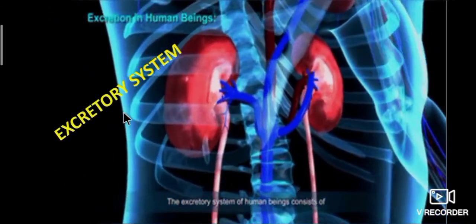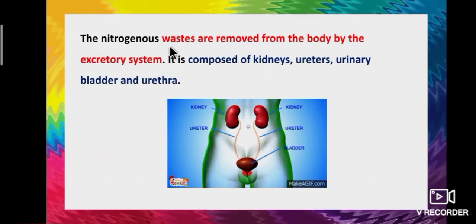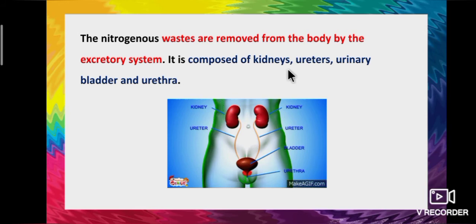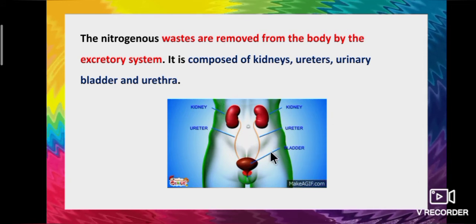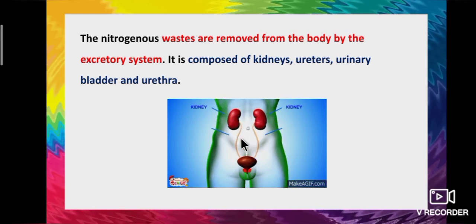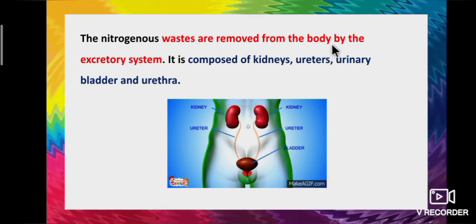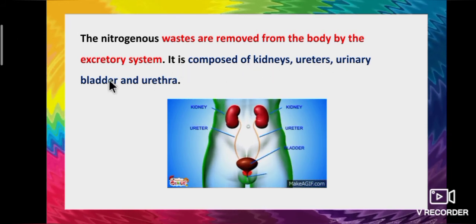Now we are going to study about the excretory system. The nitrogenous wastes are removed from the body by the excretory system. It is composed of kidneys, ureters, urinary bladder and urethra. The kidneys are bean-shaped structures. Below that are tube-like structures called ureters, then the bladder, and below that the urethra.